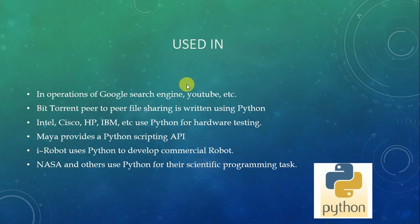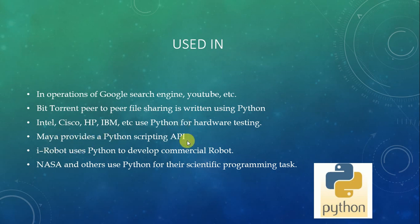Next, where is Python used? It is mainly used in the operation of Google Search Engine, YouTube, etc. BitTorrent uses peer-to-peer file sharing written in Python. Intel, Cisco, HP, IBM, etc. use Python for their hardware testing. Maya provides a Python scripting API — that is, Application Programming Interface. Commercial robots like iRobot use Python as their language, and NASA uses Python for scientific programming tasks.